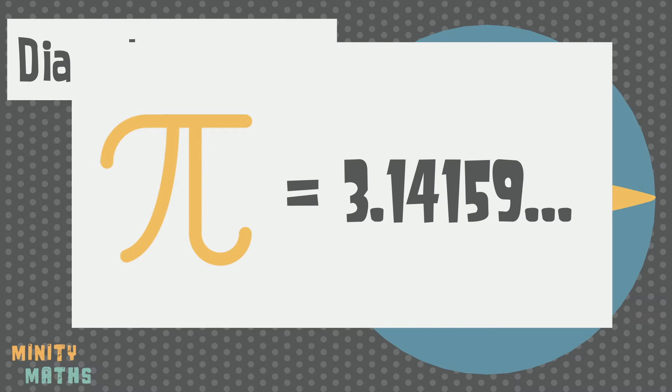Pi is a very important number, especially when it comes to circles. So let's see how pi relates to the circumference of a circle.